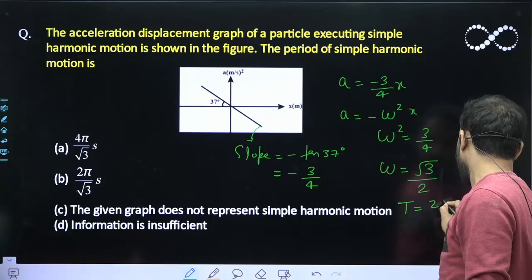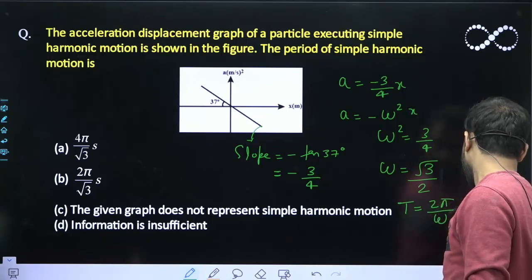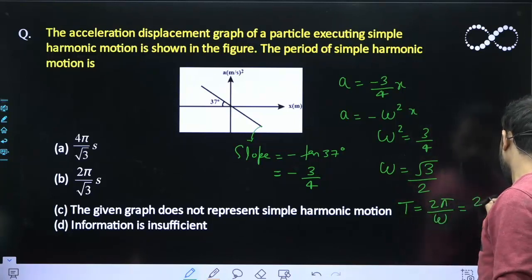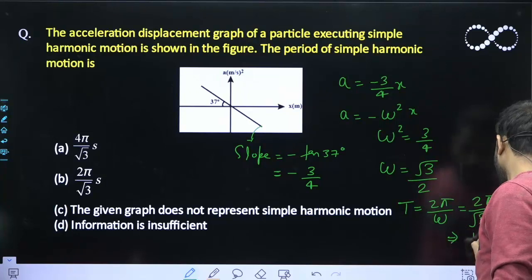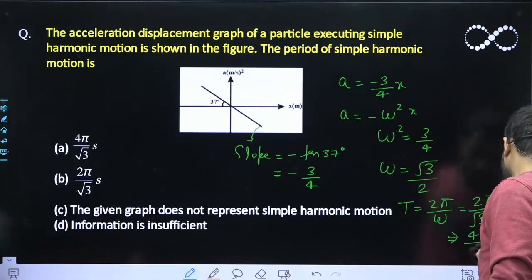I will say the time period is equal to 2 pi by omega. So, that is equal to 2 pi upon root 3. Omega value I will put here. So, that will be 2 here. So, that will become 4 pi upon root 3 second. So, this will be the answer.